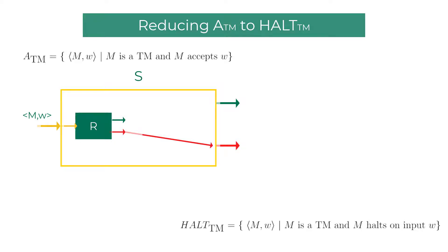When HALTTM decider R ends up in accept state it means that the machine M will halt on input string W. But it does not say whether it halts on an accept state or a reject state in the machine M. So all it says is that the machine M halts on the input string W.